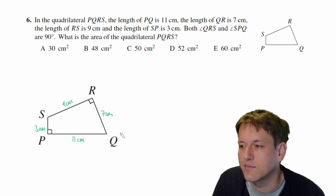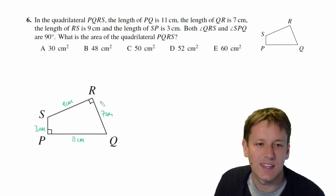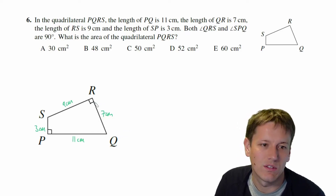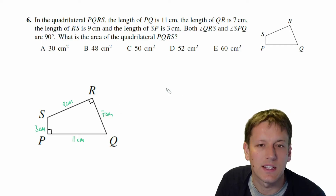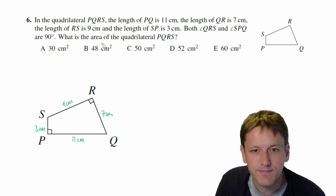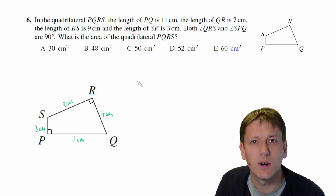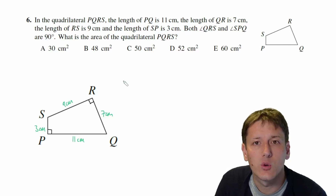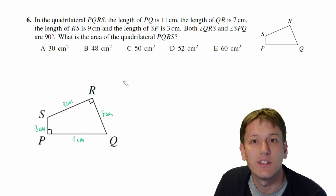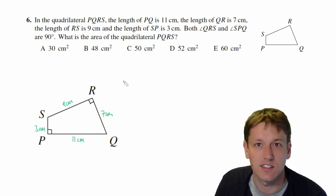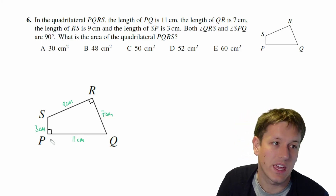Always put things on the diagram as you read through the question — diagrams in these questions make life a lot easier. It says: what is the area of the quadrilateral PQRS? We don't have any formula for quadrilaterals in general, so we're going to have to split this shape down into things that we can work out the area of.